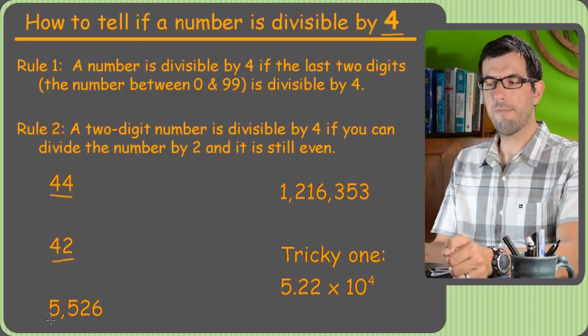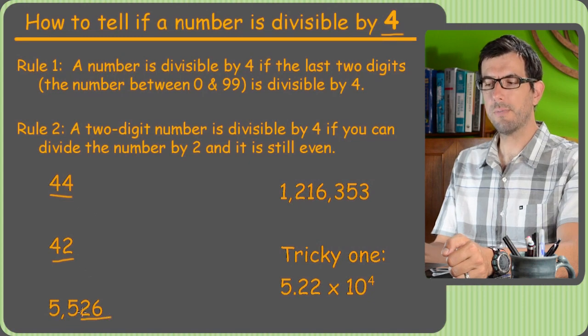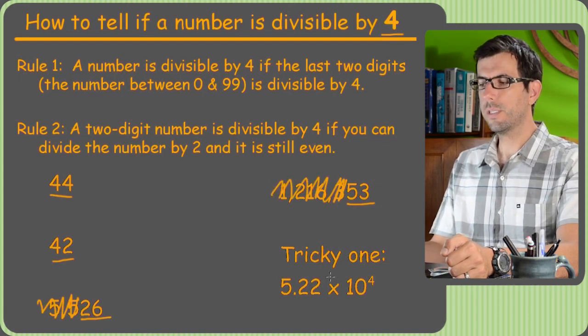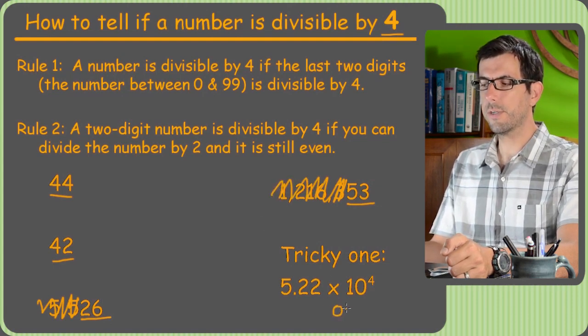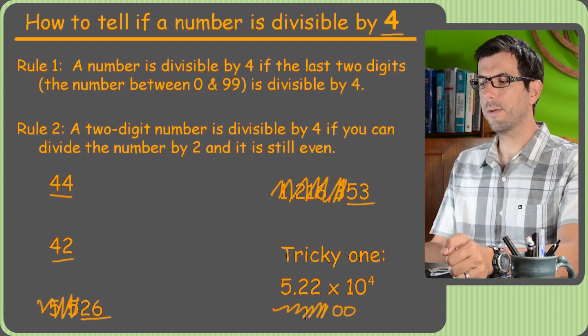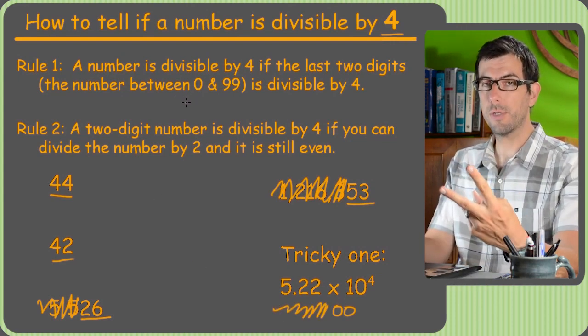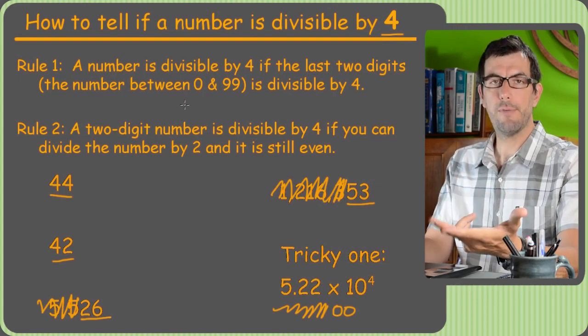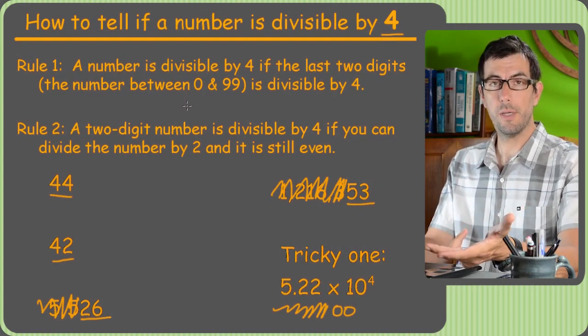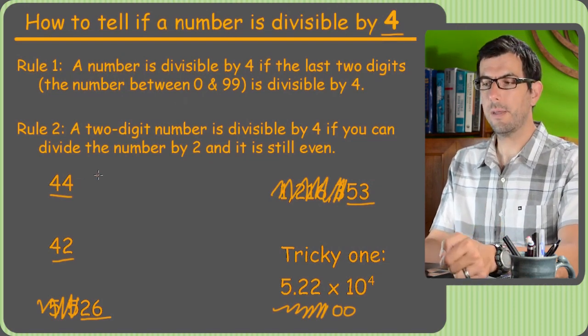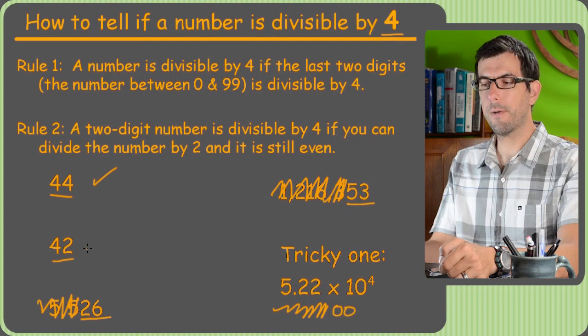Only the last two digits matter. So these two digits obviously both matter, both matter. But on this big number, 5526, only the 26 matters. We just totally forget about that. On this giant number, only the 53 matters. We can forget about everything else. And of course, this one, again, is going to end in 00. So we can just forget about everything else. Once you've got it whittled down to the last two numbers only, now you have a choice. If you recognize it from the times tables, go for it. You might know that 44 is 4 times 11. So excellent. That one is divisible by 4.